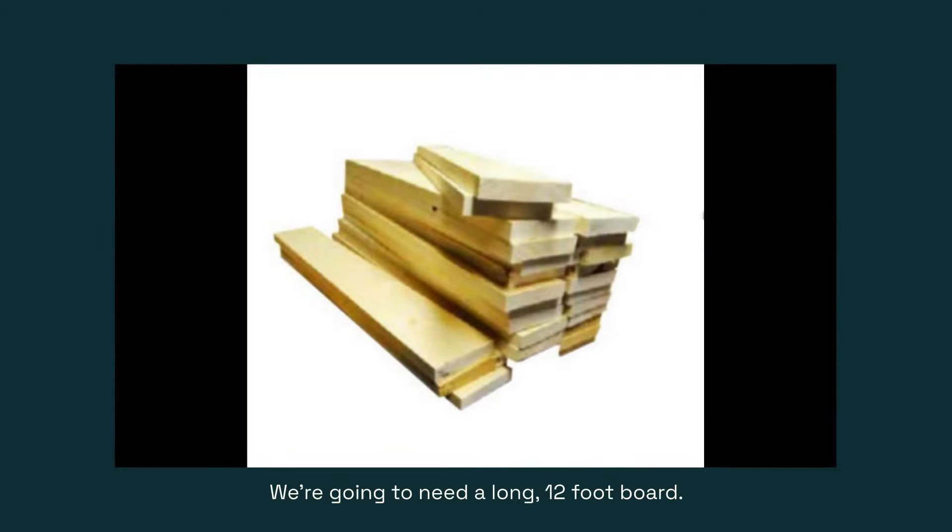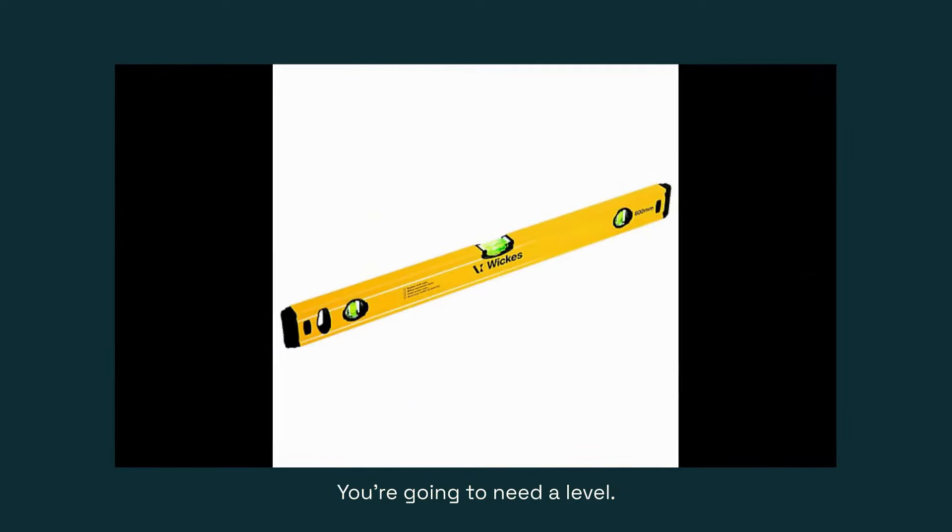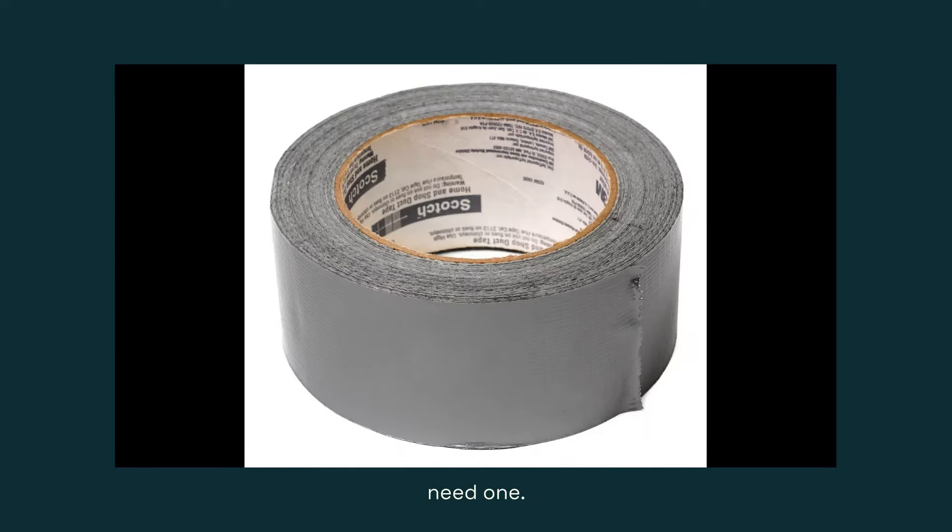Let's see what we need to do this. We're going to need a long 12-foot board - you don't need a bunch of boards, you're going to turn that board on its side. We're also going to need some metal rebar. You're going to need a level - you don't have to get a level quite as big as this one but you will need one. And of course you're going to need some duct tape.